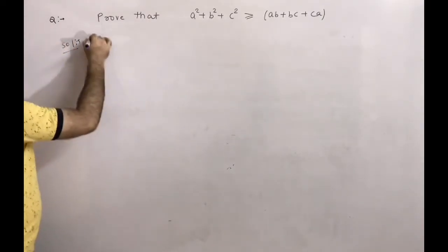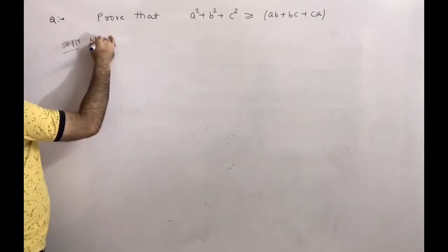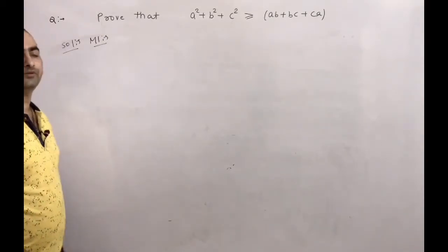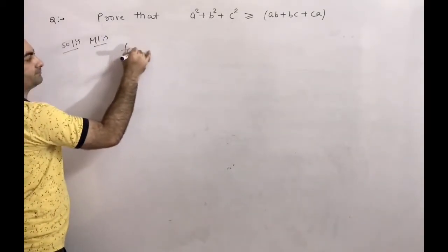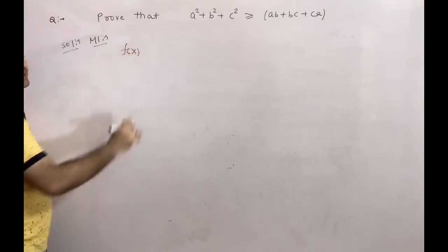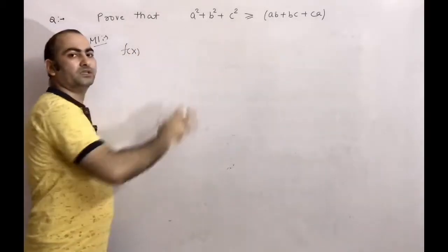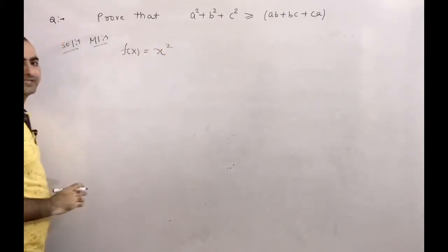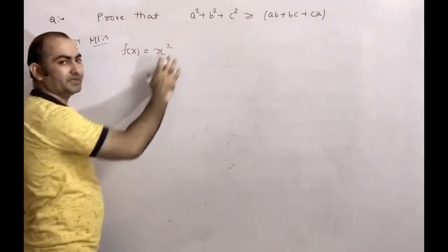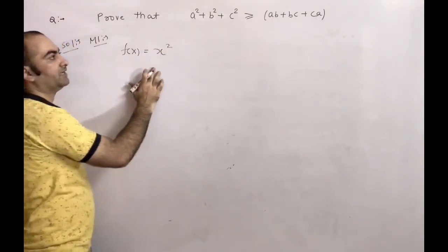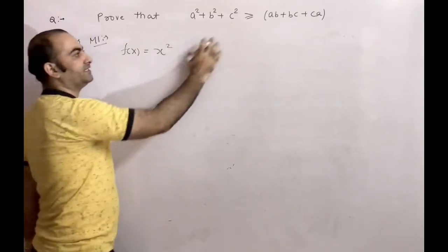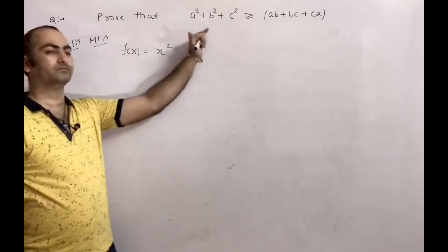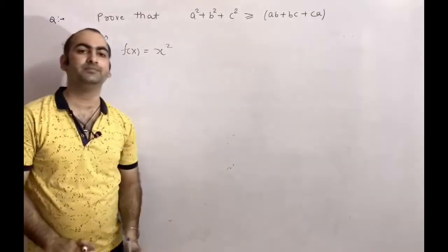Method 1: Jensen's Inequality. Here we find a function f(x) which satisfies this equation. We put f(x) = x². If we put b we get b², if we put c we get c², so this function satisfies the equation. We can use Jensen's Inequality here.